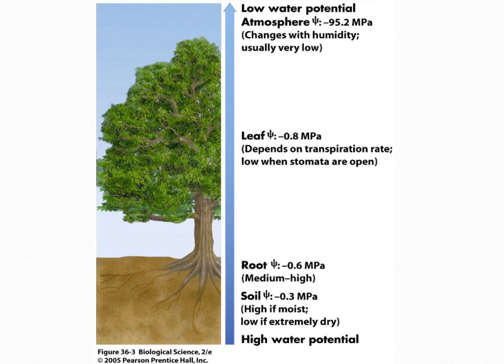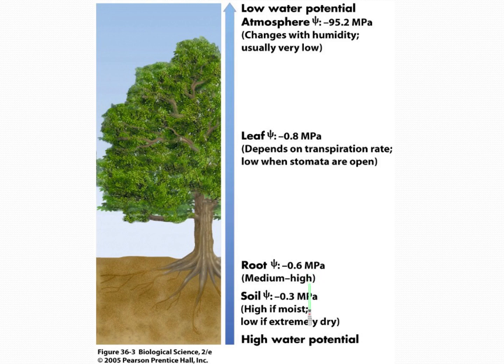Water potential also explains how transpiration occurs. We talked about transpiration with capillary action and how water climbs up the plant. Water potential means water moves from high to low. The water potential value at the top of the tree is negative 95, at the bottom it's negative 3, and it goes down as you go up the tree. So water moves from the high end at 0.3 to the top where it's the low end — that's one of the ways transpiration works.